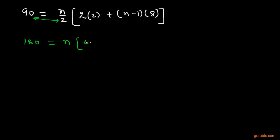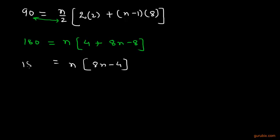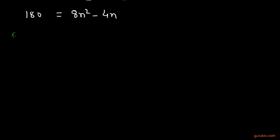Expanding the bracket: 2×2 = 4 and (n−1)×8 gives 8n − 8. Inside the bracket this simplifies to 8n − 4. Multiplying n through gives 8n² − 4n, leading to the quadratic equation 8n² − 4n − 180 = 0.